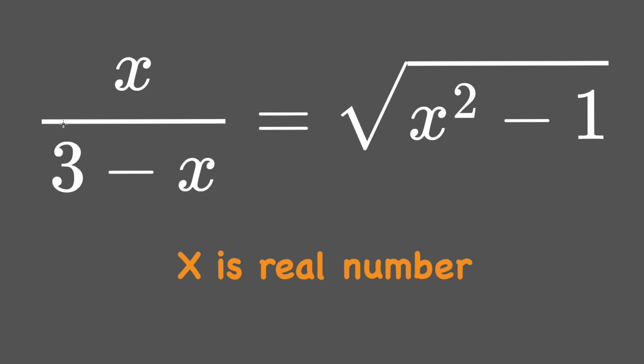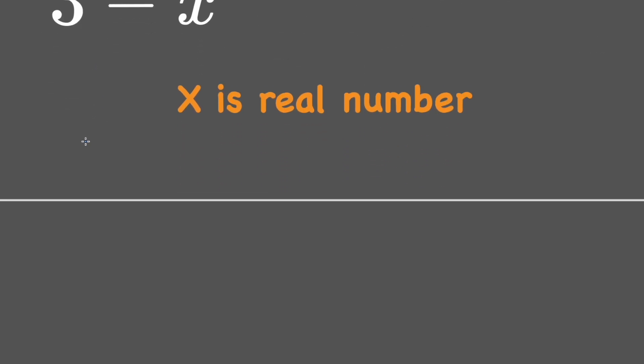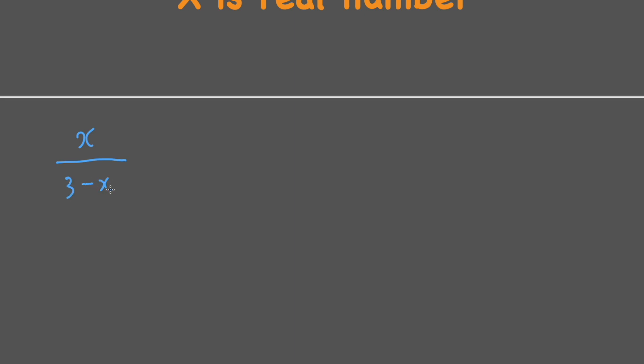Welcome back. The problem today is about a radical equation that I created myself. We have x over (3 minus x) equal to the square root of x squared minus 1.